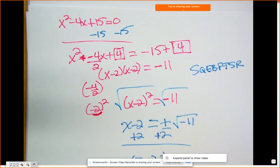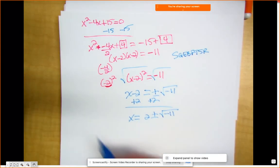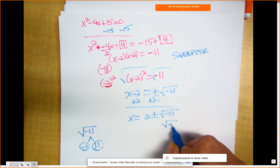x is equal to 2 plus or minus square root negative 11. Well, I can still simplify that. I'm going to go ahead and prime factor square root of negative 11. Okay, it's negative 1 times 11. Well, 11 is also prime. So the only thing I can do though is rewrite this as negative 1 times 11.